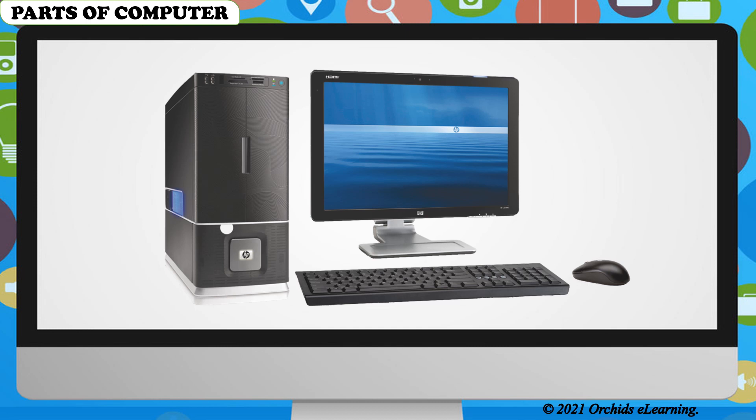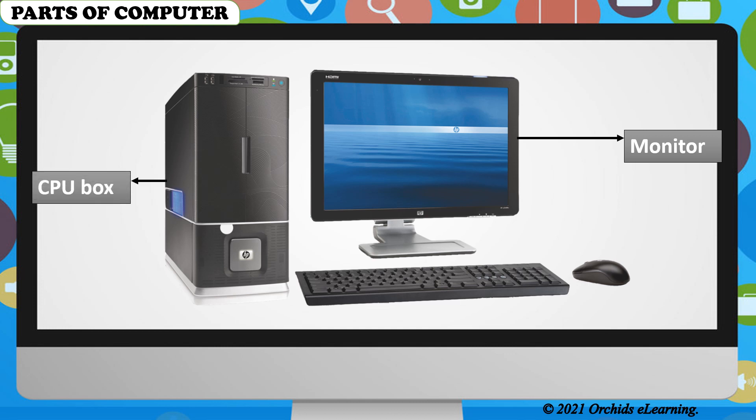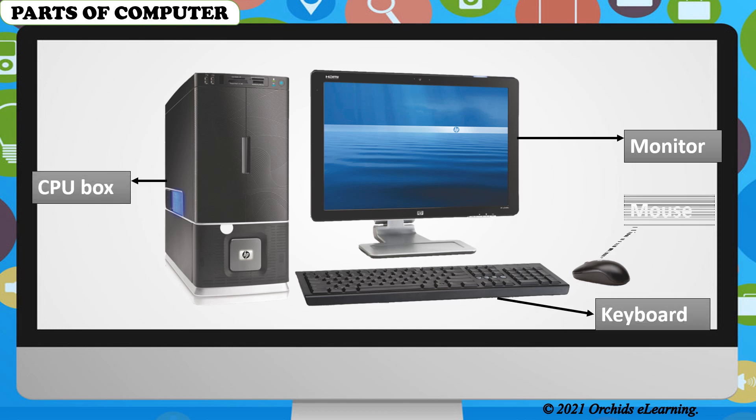The four main parts of a computer are monitor, CPU box, keyboard, and mouse.